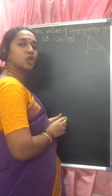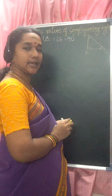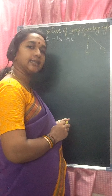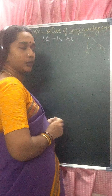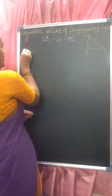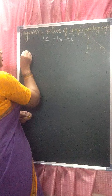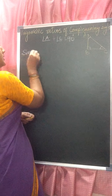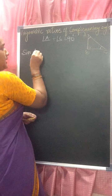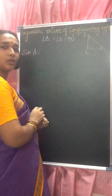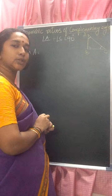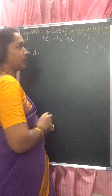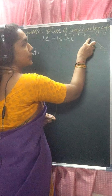You know the trigonometric ratios: sine, cos, tan, cosecant, secant, cot. So here, when you take sine A — what is sine A? Sine A is opposite by hypotenuse.